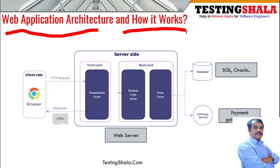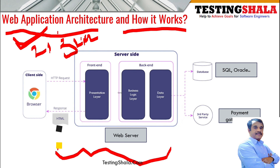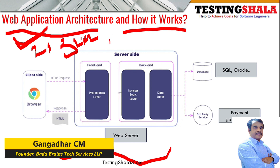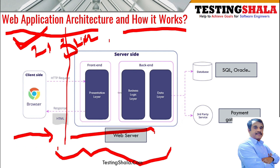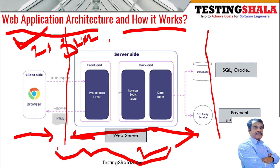A web application is designed either using a two-tier architecture or a three-tier architecture. In three-tier architecture, the first tier is the client side, the second tier is the web server, and the third tier is the back-end or third-party services tier.